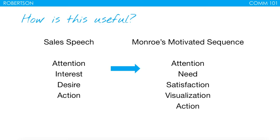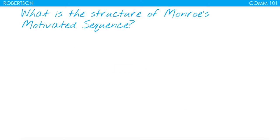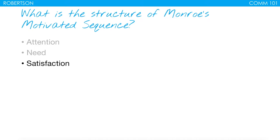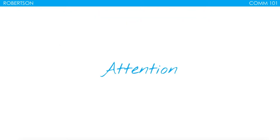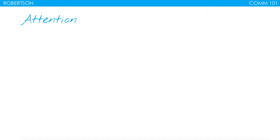Let's talk about each one of these individually. We have attention, the need, satisfaction, visualization, and the action step for Monroe's Motivated Sequence. We'll go through each one by one. First, the attention step.